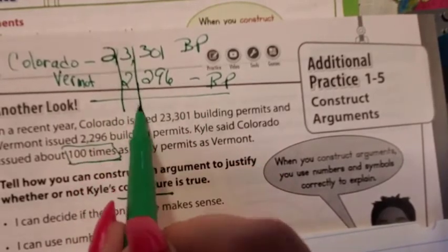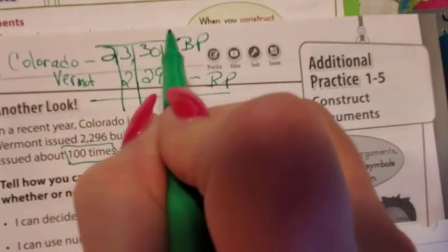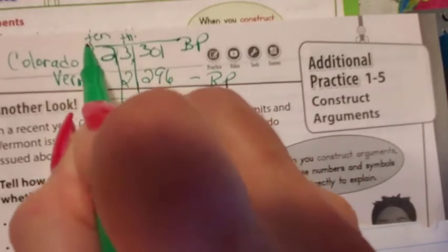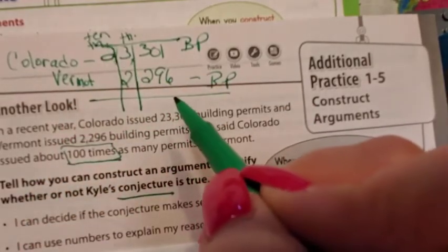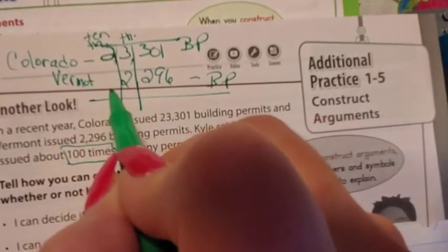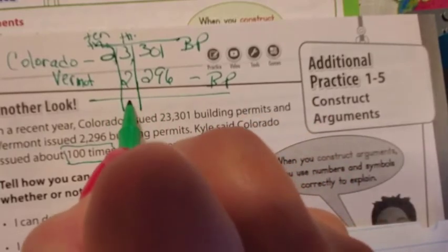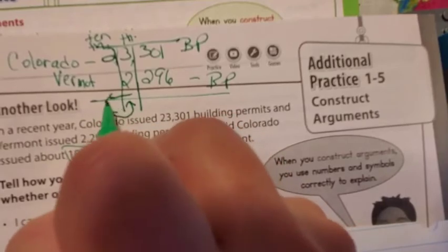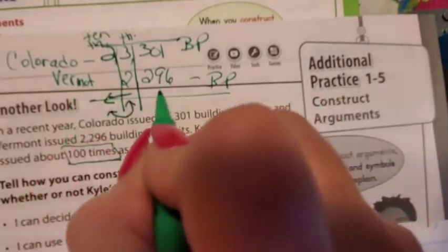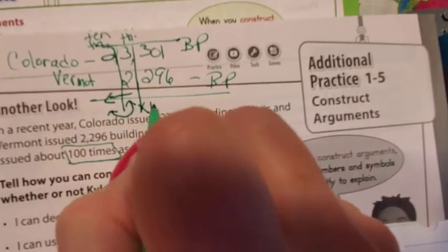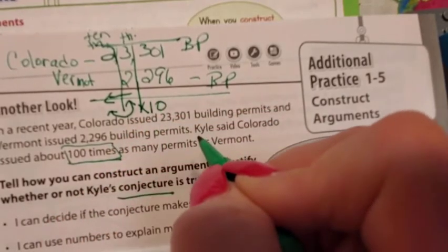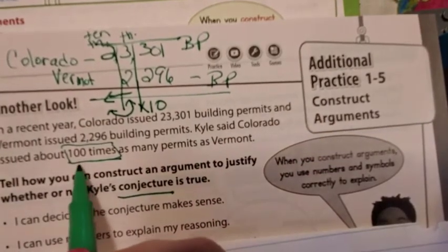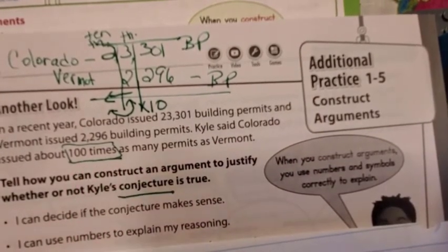So if I had a place value chart, and this was the 1,000s, and this was the 10,000s, how many places did I move over? Well, I went just one place. I just moved one place. And moving one place to the left just means times 10. So it is not 100 times. It is 10 times as many.